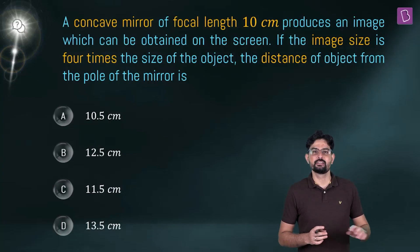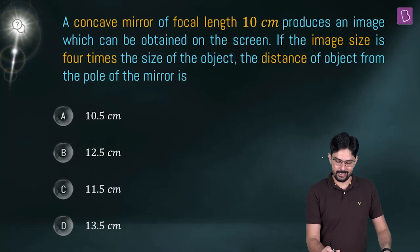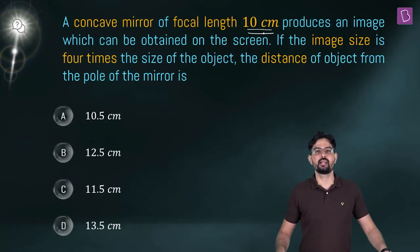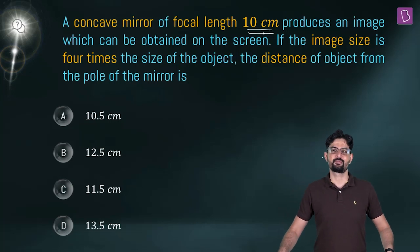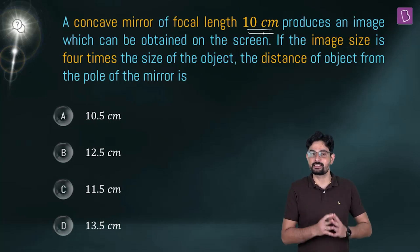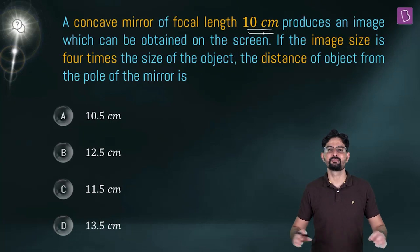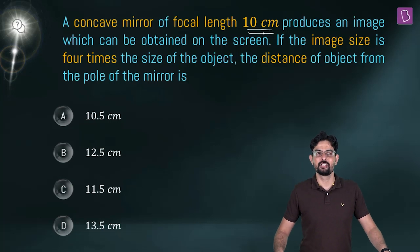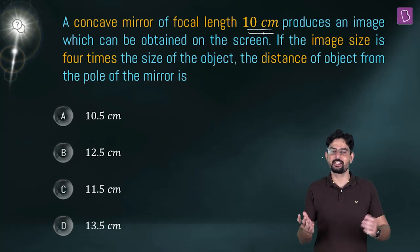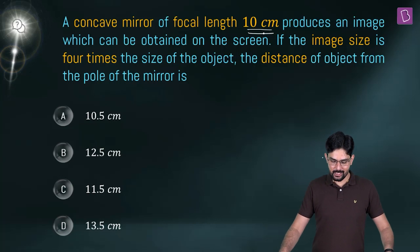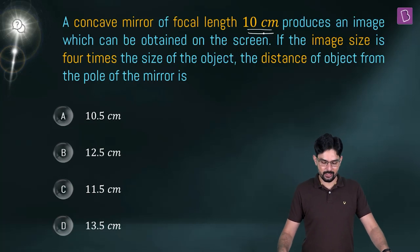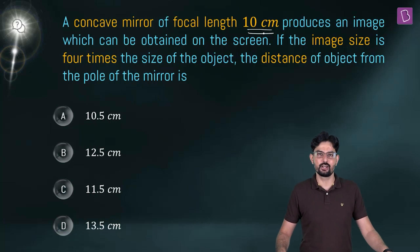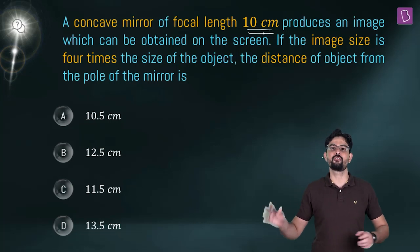There is a concave mirror whose focal length is 10 cm. It has been mentioned that this mirror produces an image which can be obtained on the screen, meaning the image is real and inverted. Given that the image size is 4 times the size of the object, you have to find out what is the distance of this object from the pole of the concave mirror.